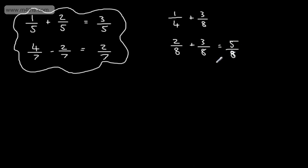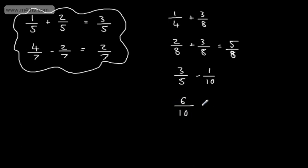We would do exactly the same technique with the denominator if we were subtracting. For example, if I had 3 over 5 and I wanted to subtract from this 1 over 10, what I would do is change this fraction into 10s. So I'd need to multiply the numerator by 2, which would give me 6, and the denominator by 2, which would give me 10. We'd have 6 over 10 minus 1 over 10, which gives me 5 over 10. If we wanted, we could go ahead and cancel, and that would give me 1 half. So we always look to cancel down.